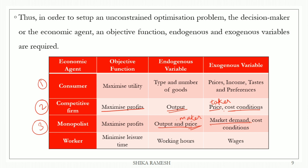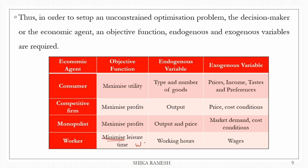For the monopolist, market demand and cost conditions are exogenous variables. The worker or household economic agent has the main objective of maximizing utility from work and leisure. If they have to work for wages, that involves a time trade-off. Let's look at the basic concepts of the optimization problem.